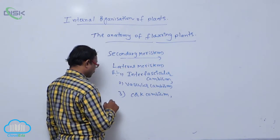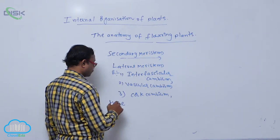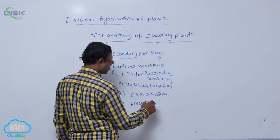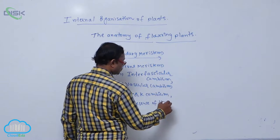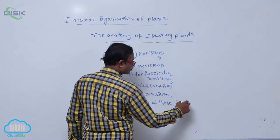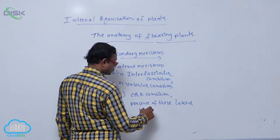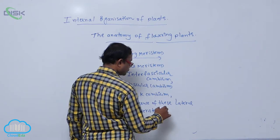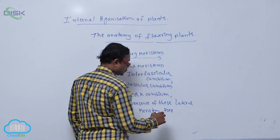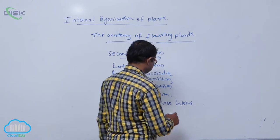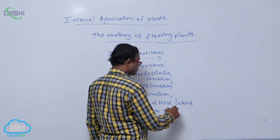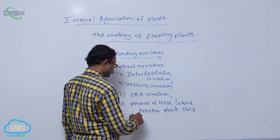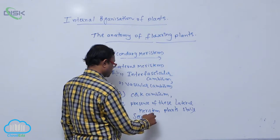By the presence of these lateral meristems, trees and plants show secondary growth.